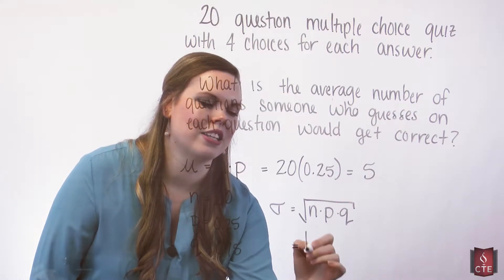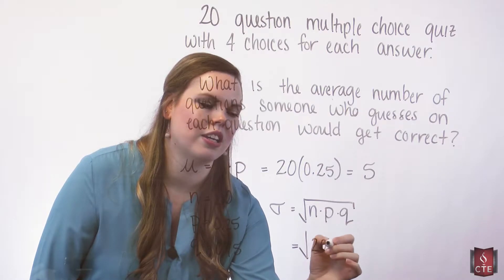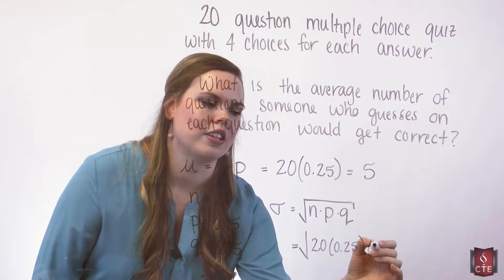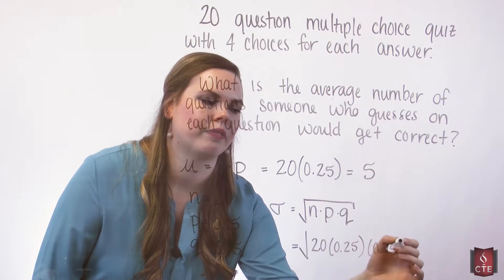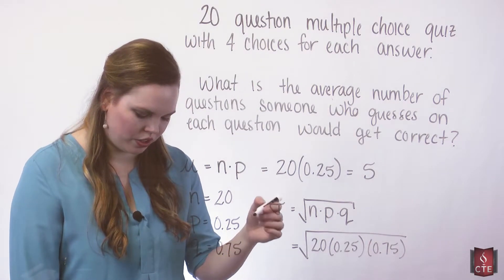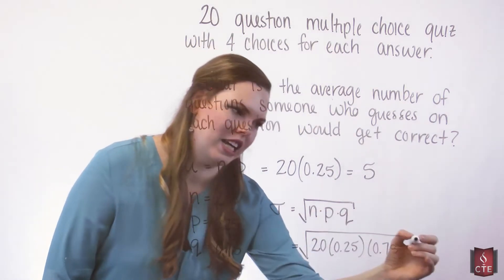So plug this in. Square root of 20 times 0.25 times 0.75. And you should get, if you were to do this, 1.94.